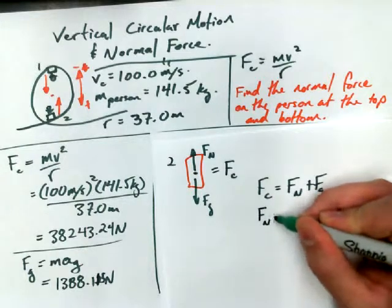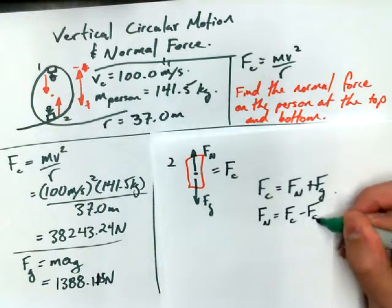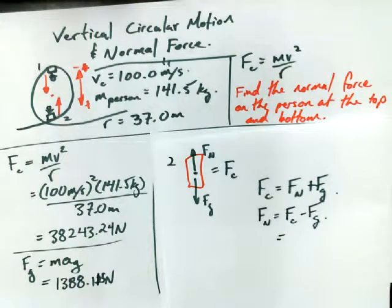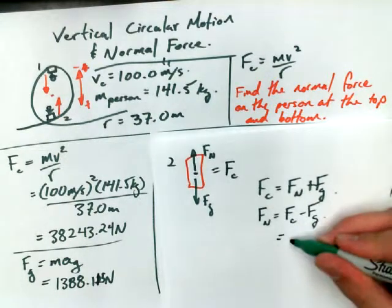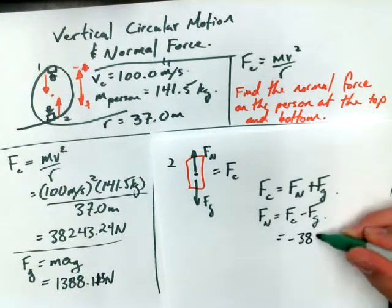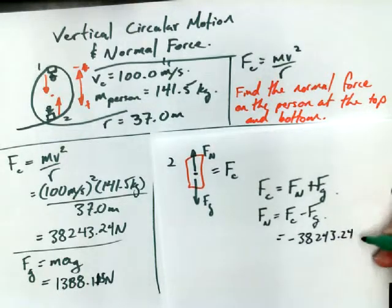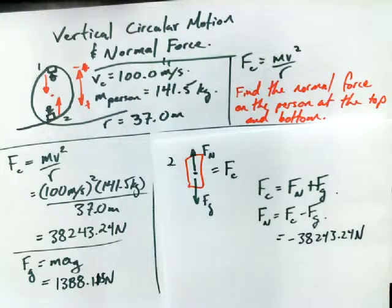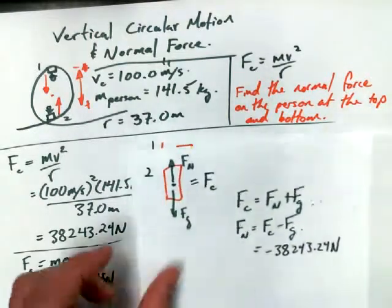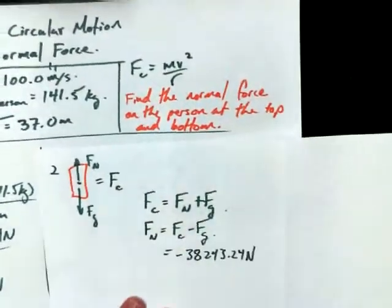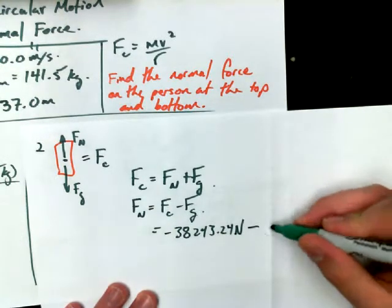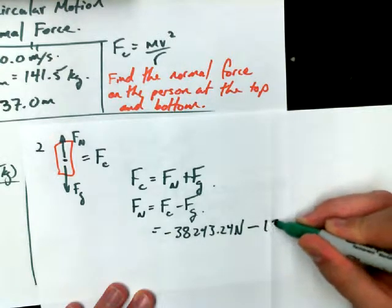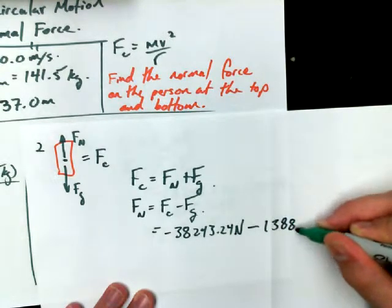Alright, so going back to what we're doing right now. We want to get f normal all by itself, fc minus fg, and then again, subbing in our values. Now, centripetal force will be upwards, because we're in the bottom position, so as we sub in our fc value, must make sure that it's negative. Oh, nuts, I'm going to run out of space. No problem. Minus fg, and fg is still downwards and down is still positive, so we're going to say minus positive 1,388.115.